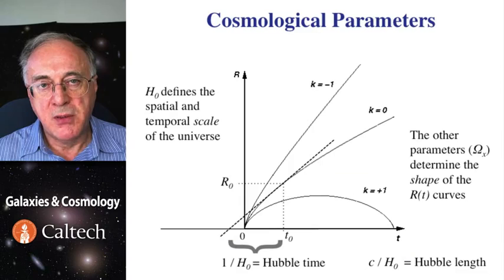So this is what cosmological parameters do. Hubble's constant gives the overall scale of the universe, temporal and spatial. It does not depend on the density of the universe, cosmological constant or anything else.